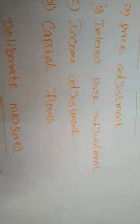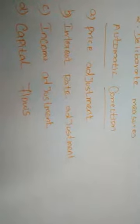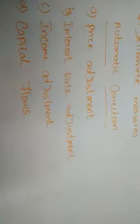The first automatic measure is price adjustment. As a result of foreign exchange outflow from a deficit country to a surplus country, there will be a fall in money supply in the deficit country and an increase in money supply in surplus countries. When we decrease the price of commodities in the deficit country, other countries will come to our nation to buy exports. Normally, if the price of a commodity is very low, demand will increase. Therefore, price adjustment is one of the measures to correct balance of payment disequilibrium.